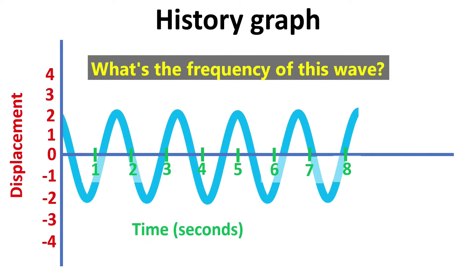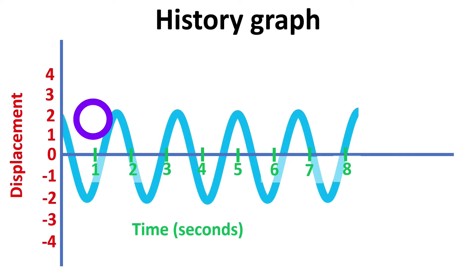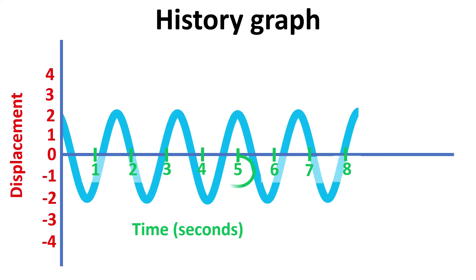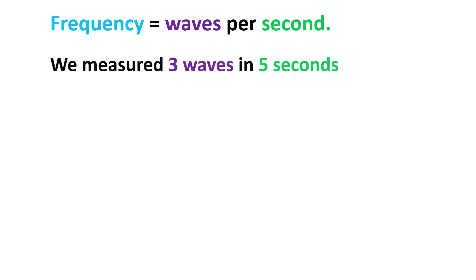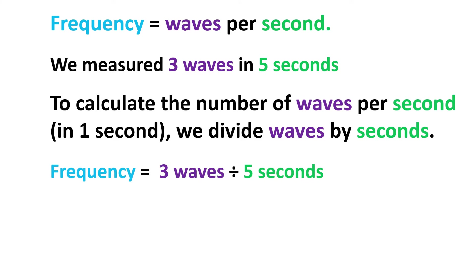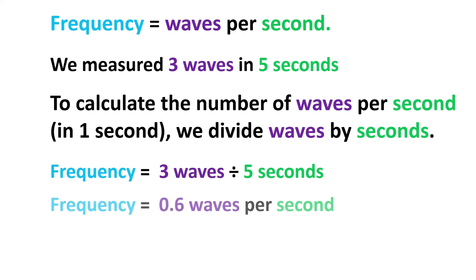You might be given a test question like this: what's the frequency of this wave? In this case, there is not a wave crest above the one-second mark, so we find a crest that's above a number. Then we count the number of waves in the interval between zero and the mark we selected. We know that frequency is defined as the number of waves per second. To calculate the number of waves per second, we divide the number of waves by the seconds. In this case, we get 0.6 waves per second, which we write as f equals 0.6 Hertz.